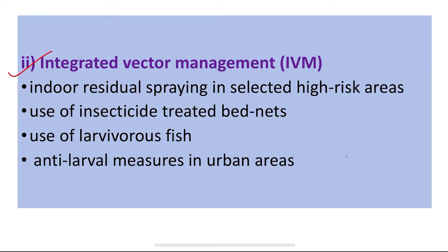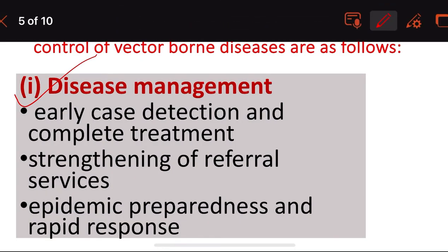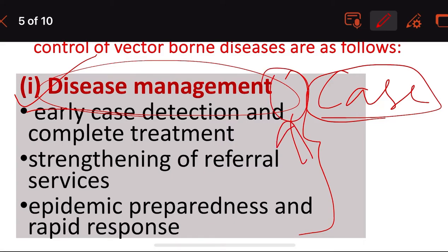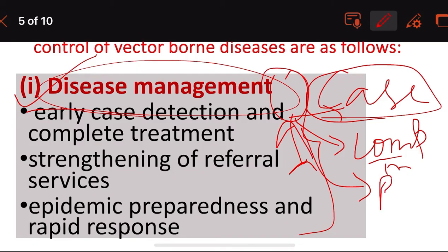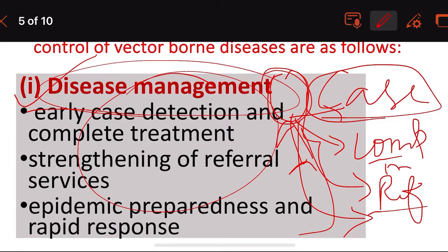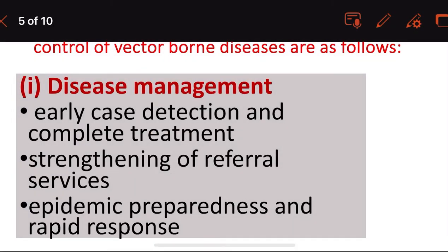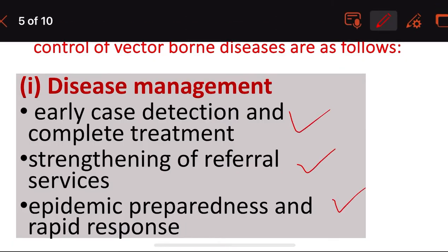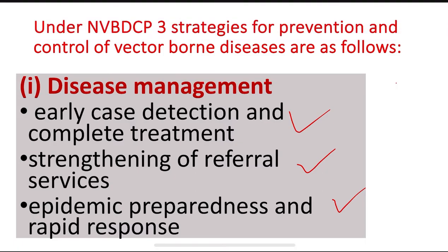To revise disease management: we detect the case, give complete treatment, strengthen referral services so further treatment can be given effectively, and if there is an epidemic outbreak, we prepare and give a rapid response. So the four components are: case detection, treatment, strengthening referral services, and epidemic preparedness and rapid response.